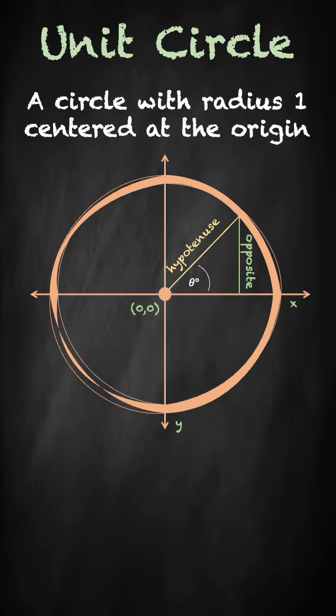We can create a right triangle by drawing in our opposite edge here in green, and our adjacent edge becomes the portion of the x-axis within the triangle.